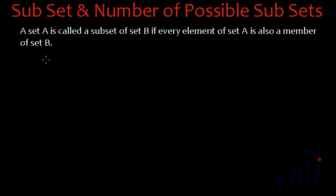So suppose if we have a set A whose elements are 1, 2, 3, 6 and 9. And if we have a set B whose elements are 1, 2, 3, 4, 5, 6, 7, 8, 9 and 10.